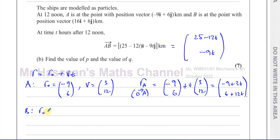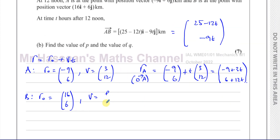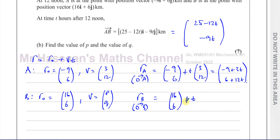For B, we have R₀ equal to 16i + 6j, so (16, 6) is its initial position. Its velocity vector is (P, Q) — that's what we have to find. P is the i component and Q is the j component. Therefore, the position vector of B, the vector from O to B, equals (16, 6) plus t times (P, Q), which gives us the vector (16 + Pt, 6 + Qt).